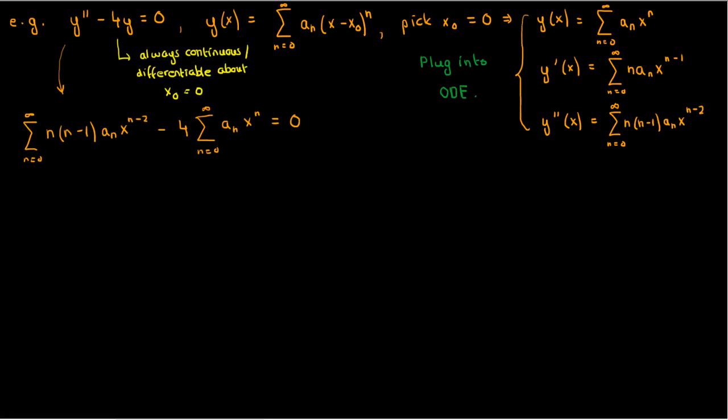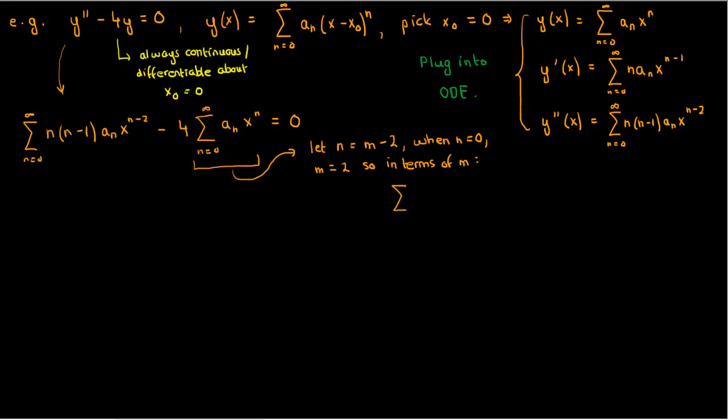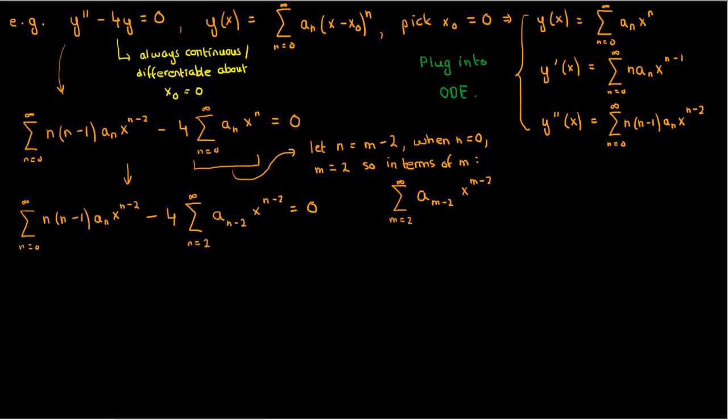We could expand everything and solve for every coefficient individually, but the expression is simple enough to get a general equation for a_n by combining the two sums. To do that, we need to make the power of x the same for both. We can't just add them directly, so we change the index n to n minus 2 by setting n equal to m minus 2. Notice that when n equals 0, m equals 2, so our summation becomes the sum from m equals 2 to infinity of a_(m−2) times x^(m−2). Changing m back to n, there's still a problem: one sum starts at 0 while the other starts at 2.